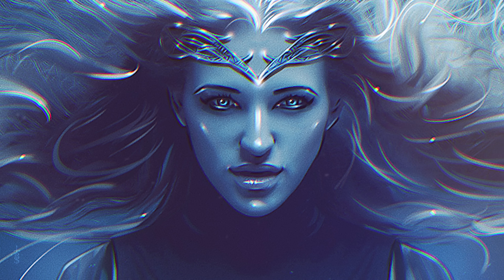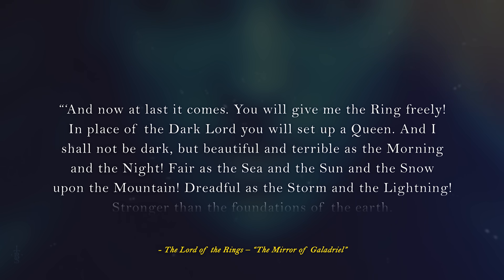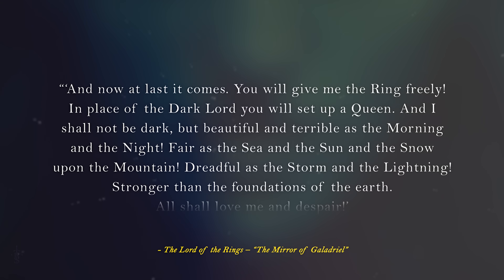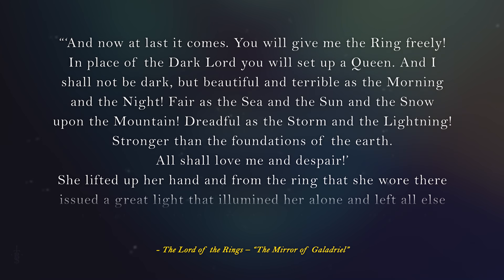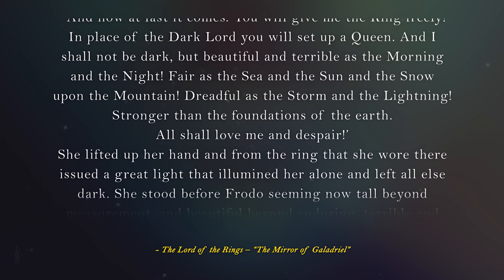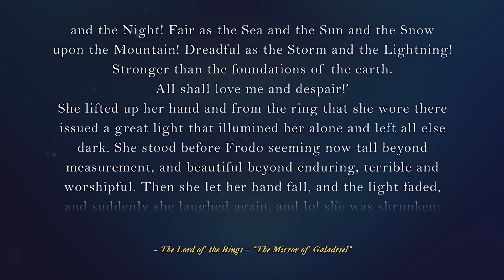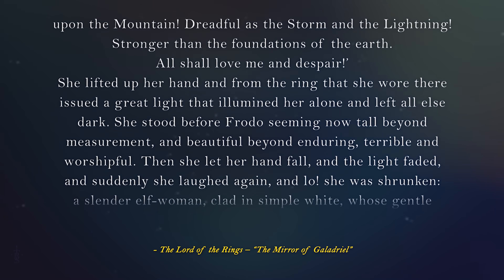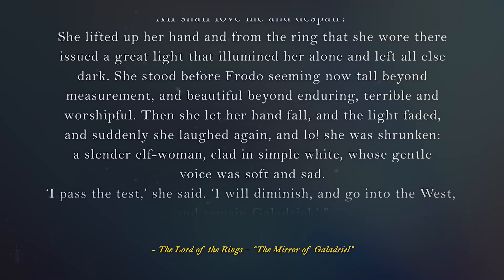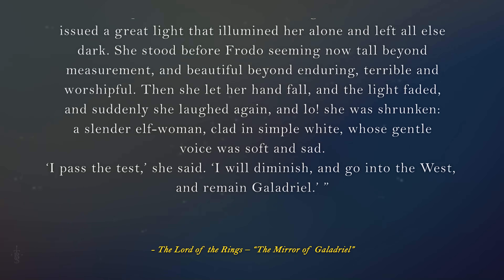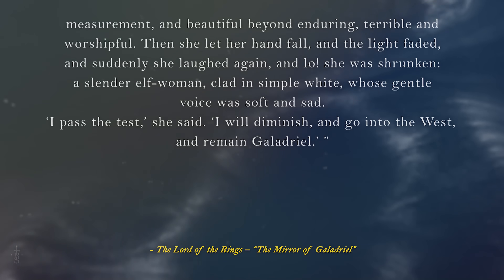So let's finish off with a quick quote from the Lord of the Rings of this event: 'And now at last it comes. You will give me the ring freely. In place of a dark lord you will set up a queen, and I shall not be dark, but beautiful and terrible as the morning and the night, fair as the sea and the sun and the snow upon the mountain, dreadful as the storm and the lightning, stronger than the foundations of the earth. All shall love me and despair.' She lifted up her hand, and from the ring that she wore there issued a great light that illuminated her alone and left all else dark. She stood before Frodo, seemingly now tall beyond measurement, and beautiful beyond enduring, terrible and worshipful. Then she let her hand fall, and the light faded, and suddenly she laughed again, and lo, she was shrunken — a slender elf woman clad in simple white, whose gentle voice was soft and sad. 'I passed the test,' she said. 'I will diminish and go into the west, and remain Galadriel.'